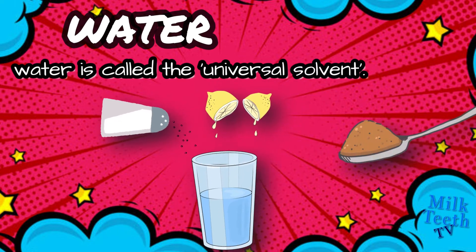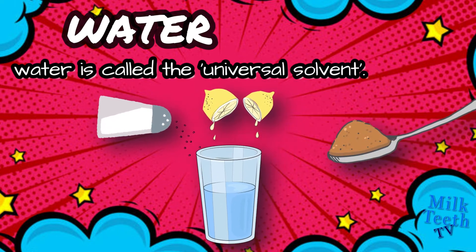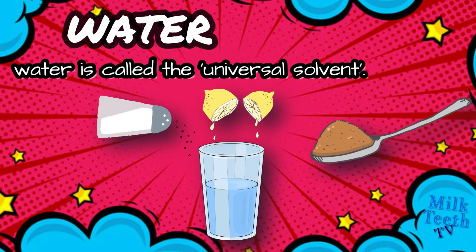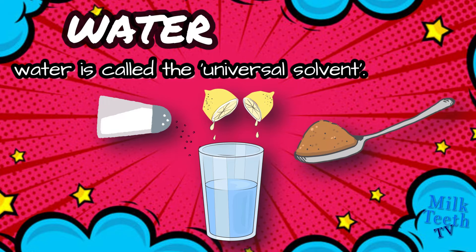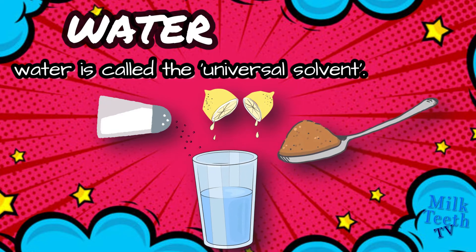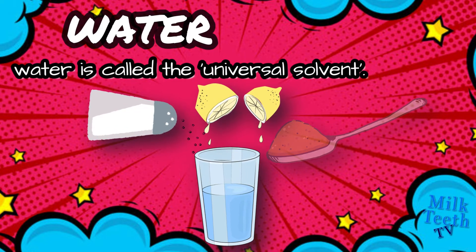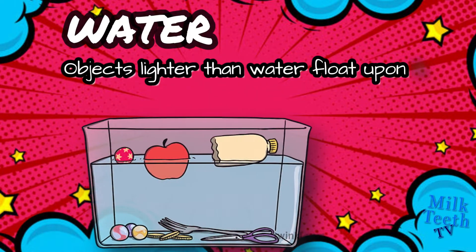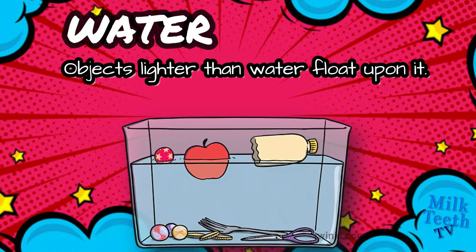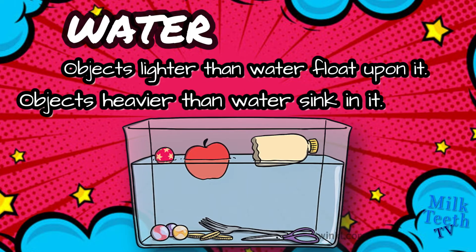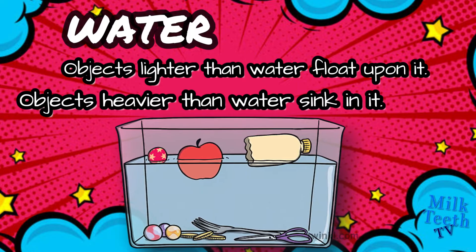Water is called a universal solvent because it can dissolve far more substances than any other liquid found in nature. However, water cannot dissolve every substance. Objects lighter than water float upon it, while objects heavier than water sink in it.